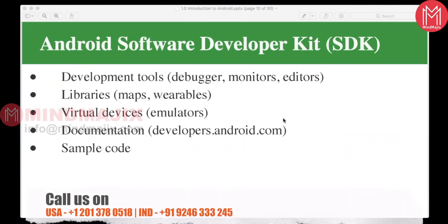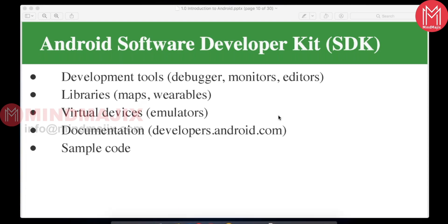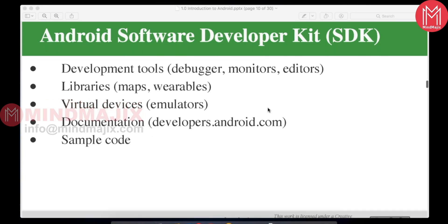The Android SDK includes development tools like a debugger, monitor, and editors — all available in Android Studio when developing an application. There are also default libraries like Maps for location tracking and Wearables for watch application development. If you don't have a physical device to test, you can create an emulator, deploy your app there, and see how it behaves. For anything on the development side you can visit developers.android.com.